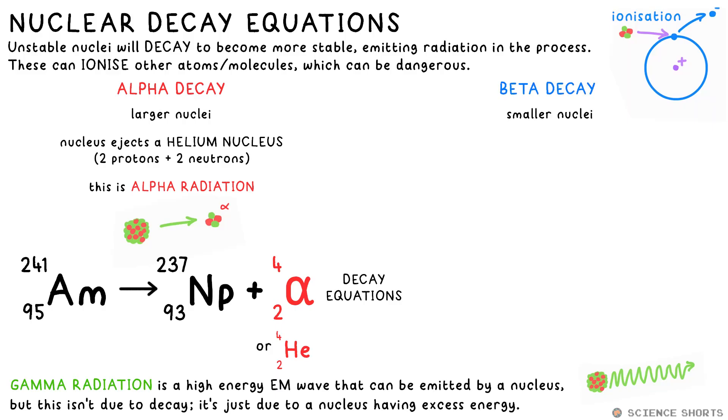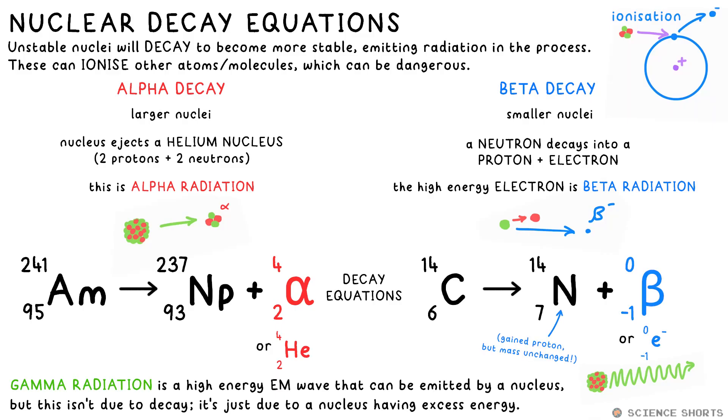Lighter nuclei like carbon-14 decay by beta or beta radiation instead. What actually happens is that a neutron in the nucleus decays into a proton and an electron. This electron escapes the nucleus and it's traveling very fast. This is what we call beta radiation. The mass of an electron is basically zero, so we put that on top. And it has the opposite charge to a proton, so we say it has an atomic number of minus one.